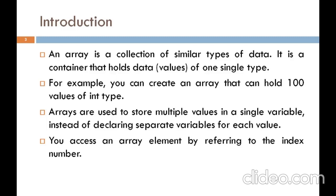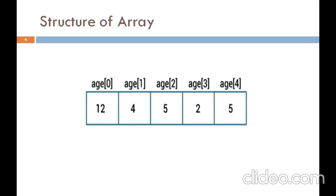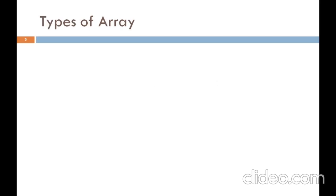These are some special factors for Java arrays which are different from C and C++. The variables in an array are ordered and each have an index beginning from 0. Java arrays can also be used as a static field, local variable, or method parameter. The size of an array must be specified by an integer value and not long or short. Now we discuss the structure of an array. In a one-dimensional array, the index values are H0, H1, H2, H3, H4, and the corresponding values are 12, 4, 5, 2, and 5. To access an array element, we use the index.